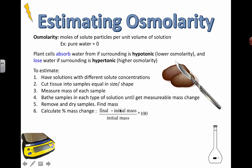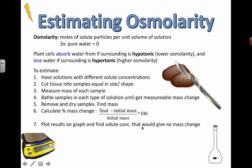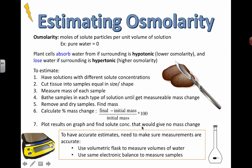Find the mass and calculate the percentage mass change. It's the final mass minus the initial mass, divided by the initial mass, multiplied by 100 to get a percentage. Then plot the results on a graph to find out the solute concentration that would give no mass change. Make sure you're measuring carefully using volumetric flasks, especially when calculating molarity of solutions.